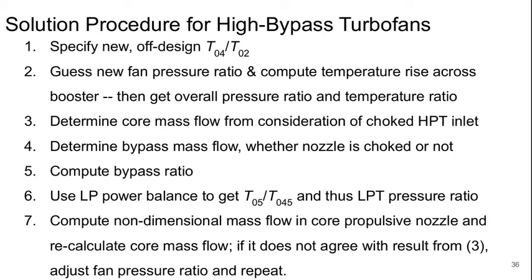Then we use the low pressure power balance to get T0.5 over T0.4.5 and thus the LPT pressure ratio. We can then compute the non-dimensional mass flow in the core propulsive nozzle and from that recalculate the core mass flow. If it doesn't agree with what we got at step 3, then the fan pressure ratio we picked is wrong. We have to go back to step 2 and repeat.